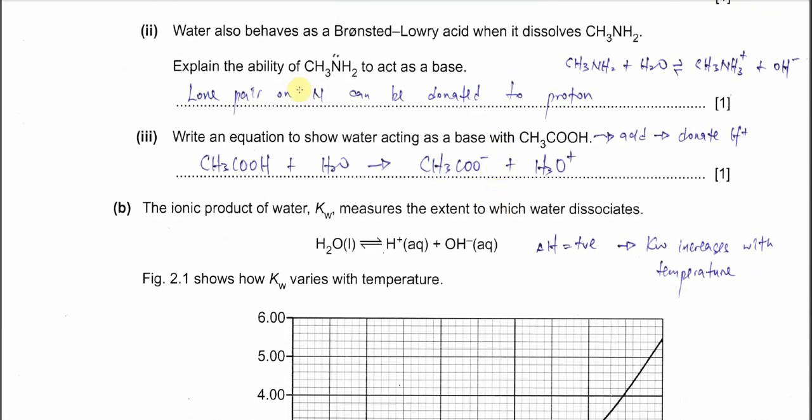Part 2: Water also behaves as a Bronsted-Lowry acid when it dissolves methylamine. Explain the ability of methylamine to act as a base. As a base means it's able to gain protons. It can gain protons because of the lone pair on the nitrogen. This lone pair can accept protons, eventually forming methylammonium.